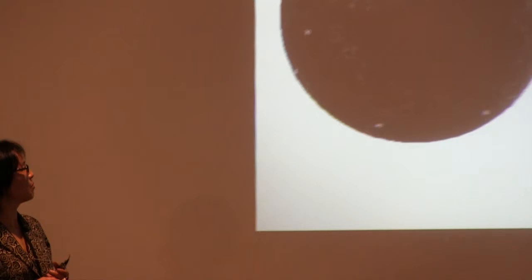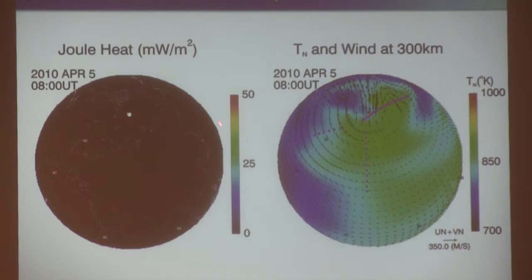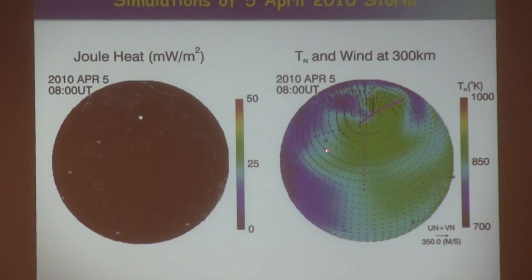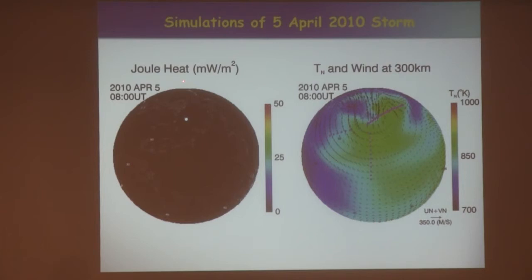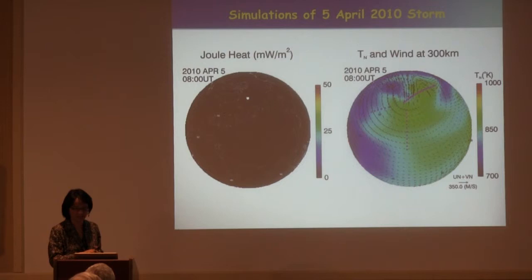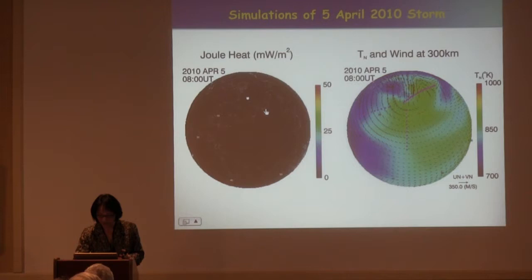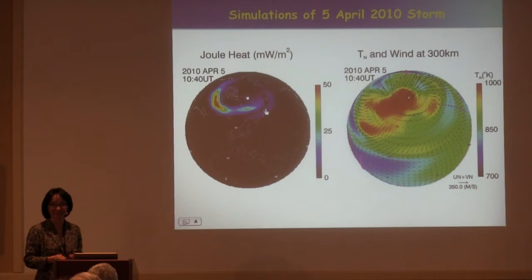This is a simulation for the April 2010 storm, which is a moderately strong event with DST only down to about minus 50 nanoteslas. Nevertheless, we have unprecedented coverage in the thermosphere with three satellites — Champ, GRACE, and GOCE — at different local times, though you can see that the sampling is really under-sampled during the storm. The left side shows hemisphere height-integrated Joule heating and the corresponding temperature and neutral wind at 300 kilometers. I'll be showing a movie. Thank you.